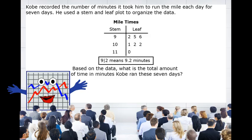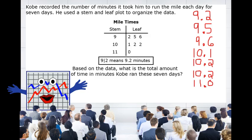The key suggests that the stem represents the ones place and the leaf represents the tenths place. So our numbers in the stem and leaf plot should be 9.2, 9.5, 9.6, 10.1, 10.2, and 11.0. Now,